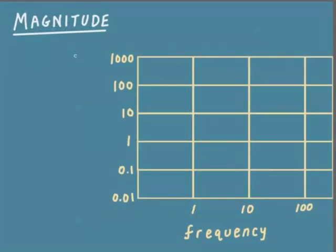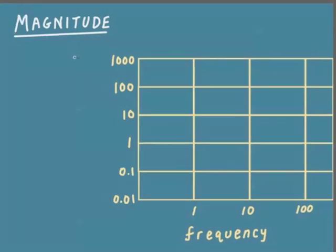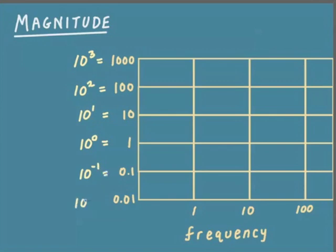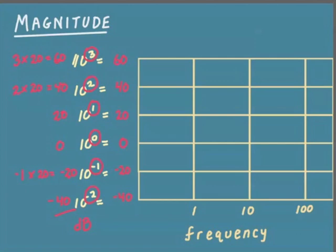Let's suppose you have a frequency response plot that you just sketched by hand, and you want to convert it to dB. How would you go about doing this? The first step will be to write each of the gains as powers of 10. So 10 to the third is 1000, 100 becomes 10 squared, and so on. Now we'll note the exponents in these powers of 10. Then we take each one of the exponents and multiply it by 20. These values then are the magnitudes in dB.